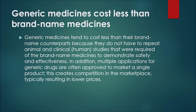The last point is that generic medicines cost less than brand name medicines. Generic medicines tend to cost less than their brand name counterparts because they do not have to repeat animal and clinical or human studies that were required of the brand name medicine to demonstrate safety and effectiveness. In addition, multiple applications for generic drugs are often approved to market a single product, which creates competition in the marketplace, typically resulting in lower prices.